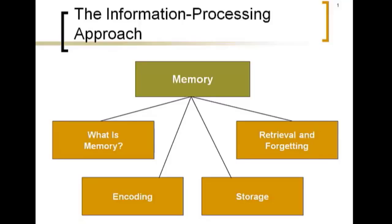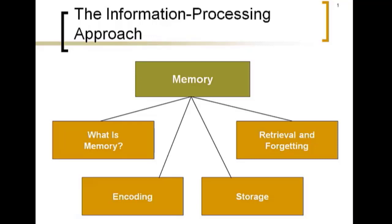So today we're going to be carrying on talking about the information processing approach — really talking about cognitive psychology here. We've talked about attention; today we're going to be talking about memory. Before I do that, there is a question. Whenever we talk about memory and the classroom, probably the thing that comes to mind is rote memorization — basically memorizing information as it is without really including creativity, critical thinking, or application, just memorizing the information exactly as it is. Rote memorization is something that people have come to look down upon quite a bit.